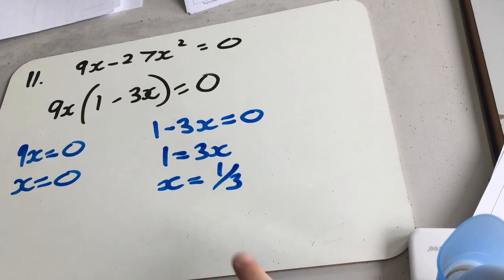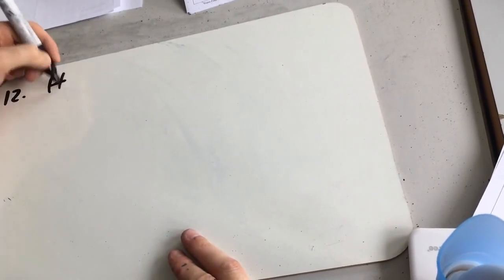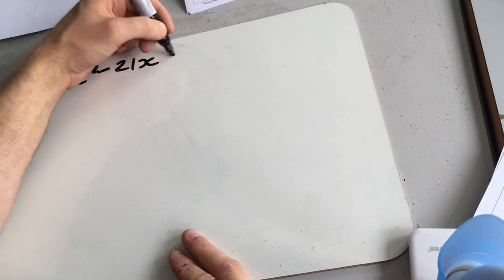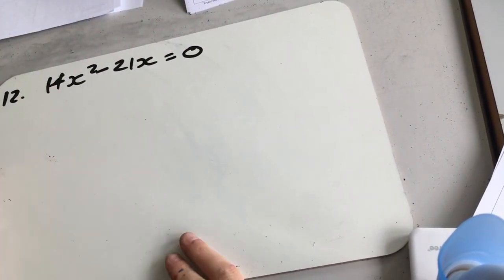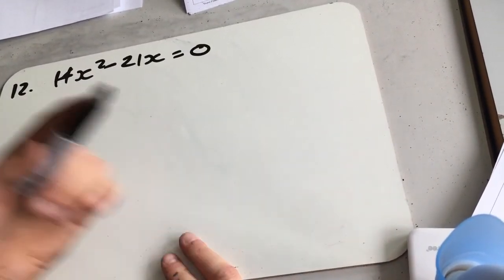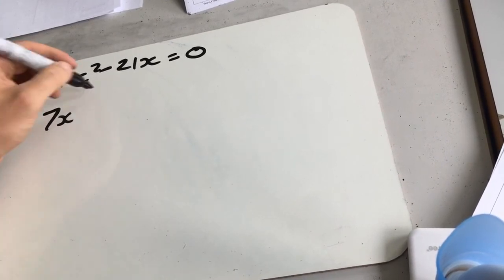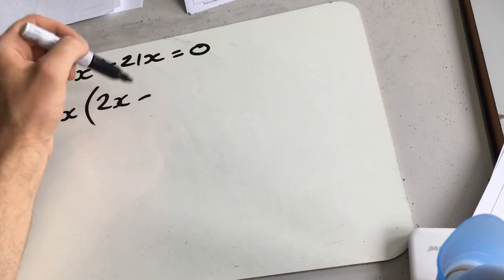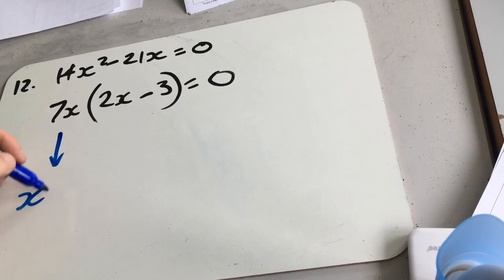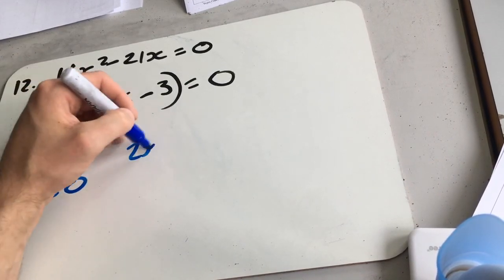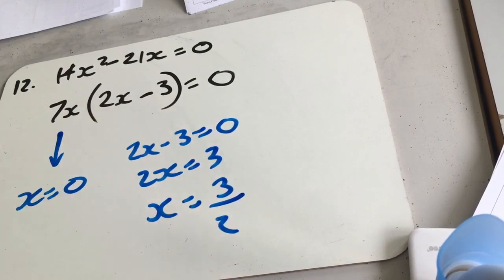Last one: 14x squared minus 21x equals 0. We need a common factor of 14 and 21, which is 7. Taking out 7x: 7x(2x minus 3) equals 0. Either x equals 0, or 2x minus 3 equals 0, giving 2x equals 3, so x equals three halves.